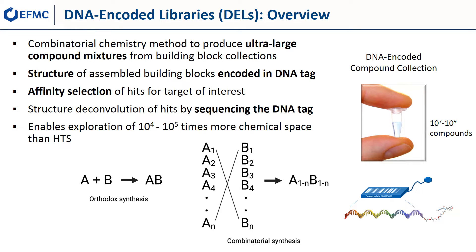There are many texts that describe the history of combinatorial chemistry and they are easily found in the literature. When thinking of an ideal encoding tag, nature of course has provided the finest tag in existence: DNA. What if a combinatorial library could be made with a DNA tag? The revolution in PCR amplification and sequencing techniques in the 2000s helped to drive the development of DNA encoded library methodology.